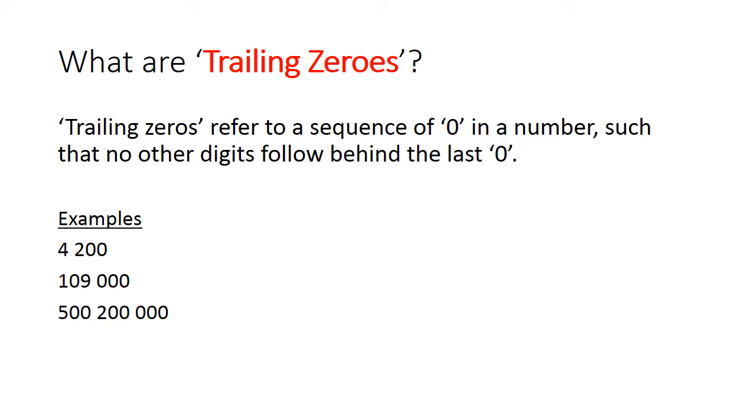So let's begin with the definition and some examples of trailing zeros. Trailing zeros refer to a sequence of zeros in a number such that no other digits follow behind the last zero.